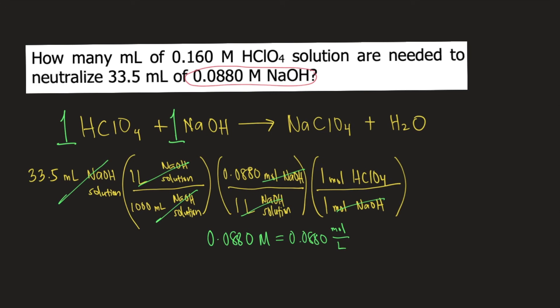Also, in the problem, we are given the concentration of perchloric acid, which is 0.160 molar. Again, 0.160 molar is equivalent to 0.160 moles per liter. So 1 liter of perchloric acid solution contains 0.160 moles of perchloric acid. So moles of perchloric acid will cancel. Now you have liters of perchloric acid.